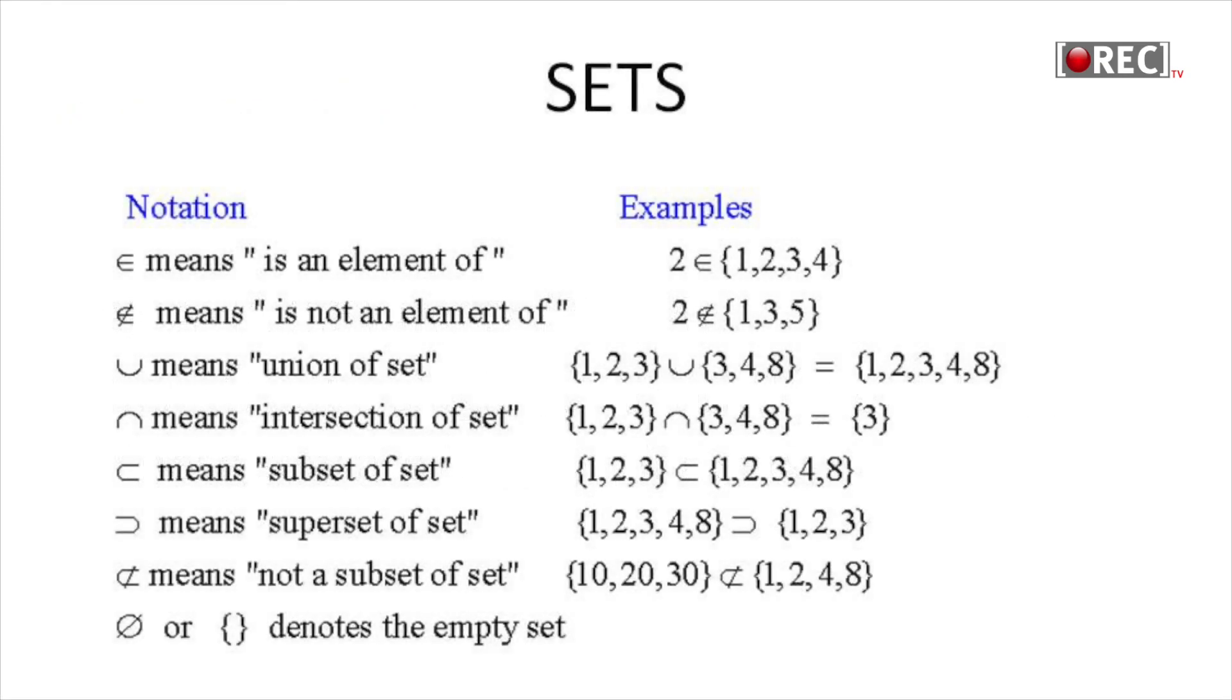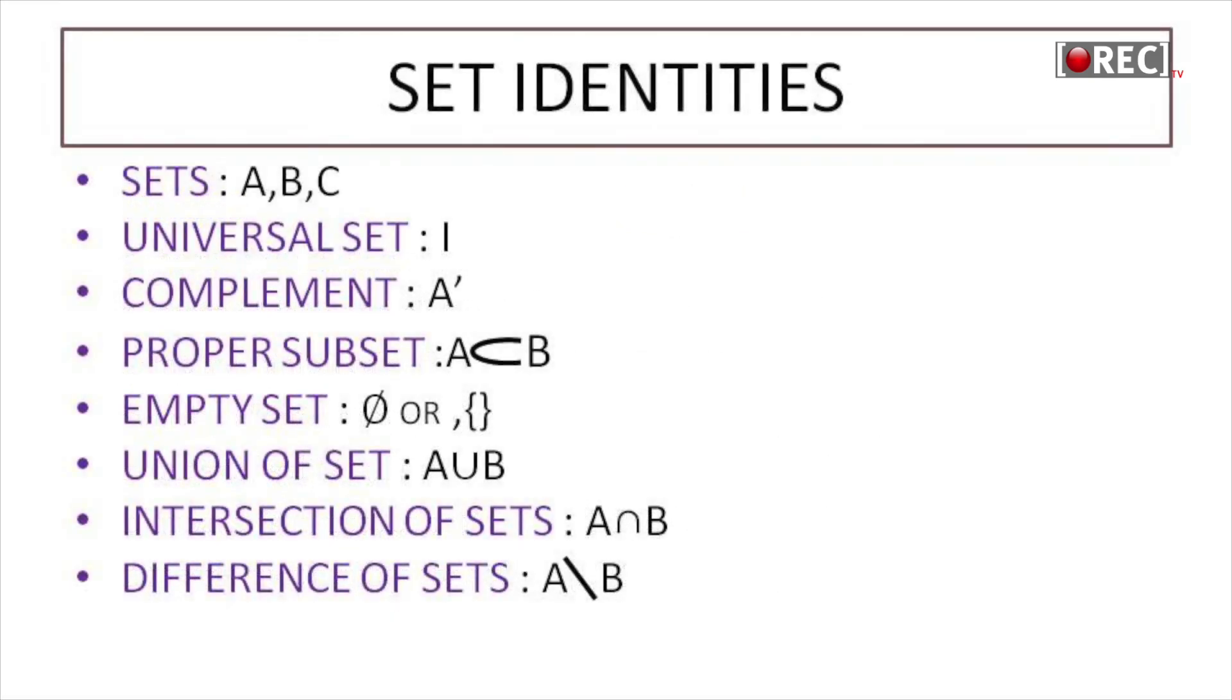Today we discussed sets, their representation, and set types. The types include finite set, infinite set, subset, proper subset, universal set, empty or null set, singleton set or unit set, equal set, equivalent set, overlapping set, and disjoint set. Next class, we will discuss Venn diagrams. Thanks for watching.